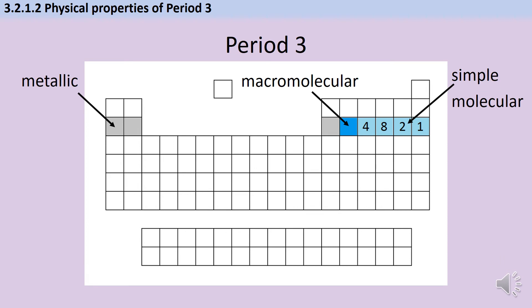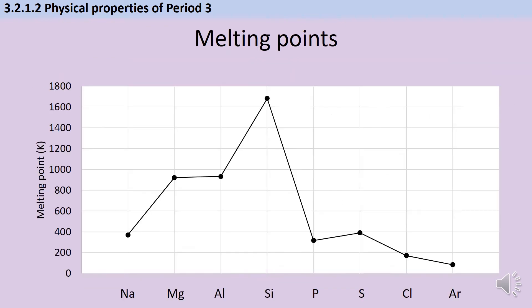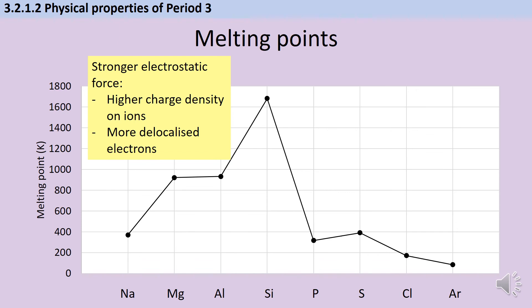To discuss the melting points of period 3, we need to know what the structure and bonding of these elements looks like. Sodium, magnesium, and aluminium are all metallic structures, whereas silicon is a giant covalent structure with thousands of atoms in one macromolecule, and then the remaining non-metals form simple molecules with 4, 8, or 2 atoms, or just one atomic argon. Knowing this helps us to explain the melting points of each element. If we look at sodium, magnesium, and aluminium, these have comparatively high melting points because they're metallic structures, so it requires a lot of energy to overcome that strong electrostatic force of attraction between those positive cations and the negative delocalised electrons. But also, we see that magnesium and aluminium have slightly higher melting points than sodium, and the reason for this is that they have a stronger electrostatic force because there's a higher charge density on the 2 plus and 3 plus ions compared to the single plus ions of sodium, and also there are more delocalised electrons. So overall, we have that stronger electrostatic force.